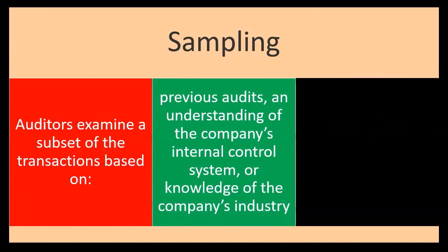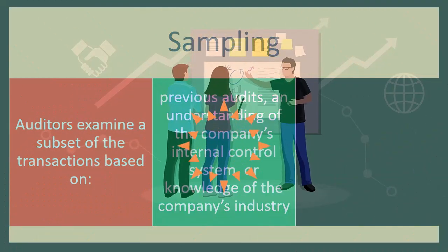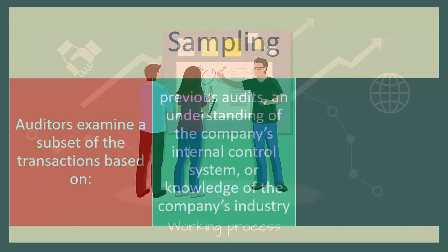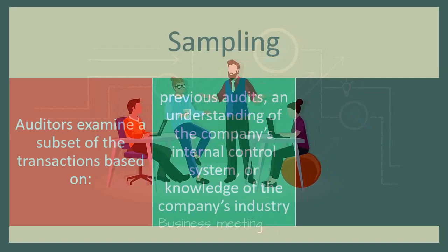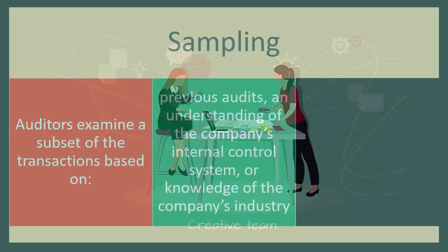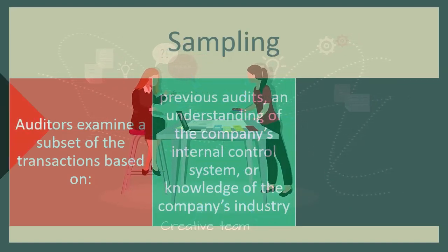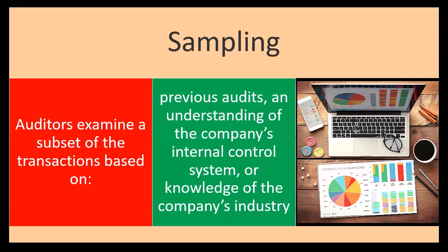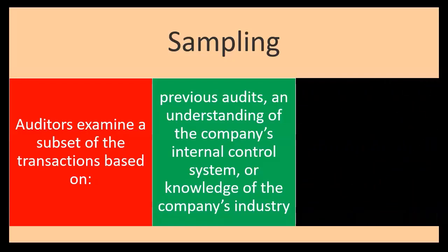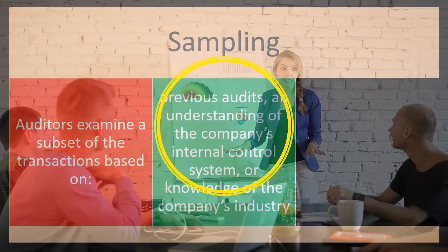To test internal controls, we'll do some type of sampling based on our understanding of the company, possibly informed by prior audits, and our knowledge of the industry. Different industries dictate what types of things are more important to test. The point of the sample is to make an accurate decision with less information — similar to a political poll where you sample a subset of people rather than calling everyone in the country, using statistical sampling to get a representative result. There are different sampling methods applicable to different objectives.